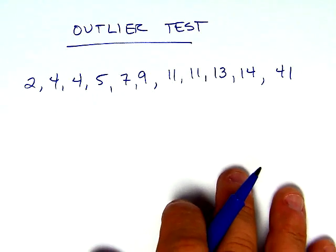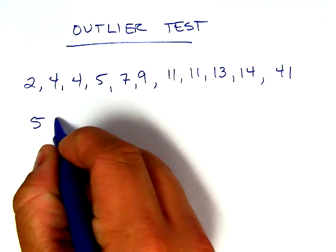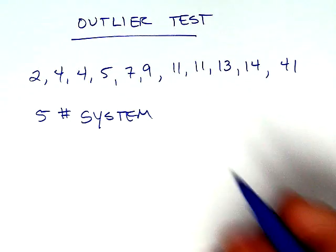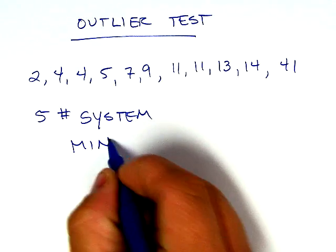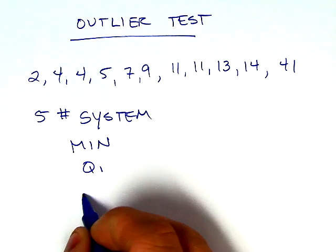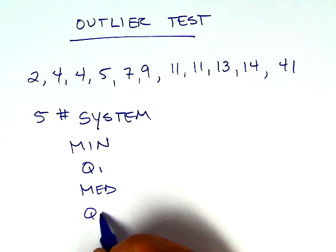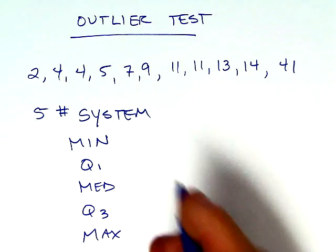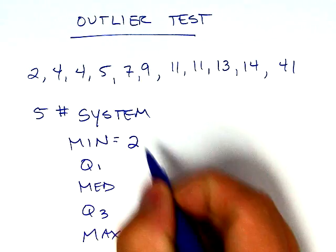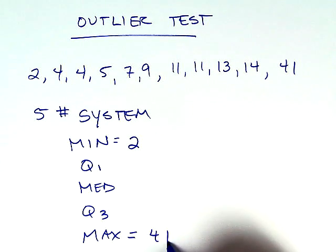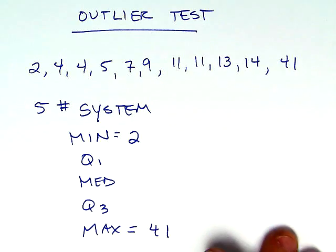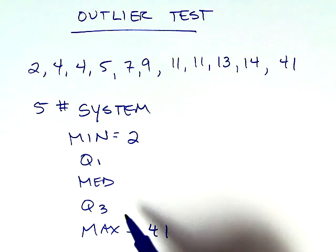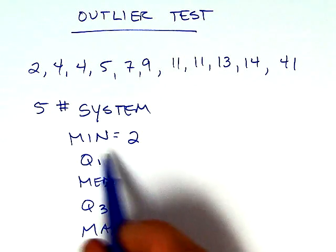The next thing we want to do is find our five number system. In that five number system we have our minimum value, Q1, median, Q3, and maximum value. The minimum and maximum are really easy. The minimum value is 2 and the maximum value is 41. You just look at the numerical data set from least to greatest and it's the first and last number.